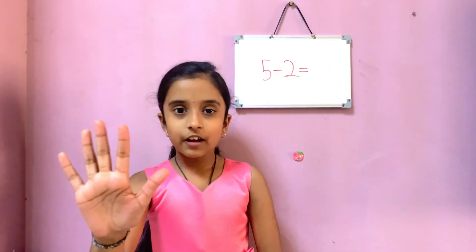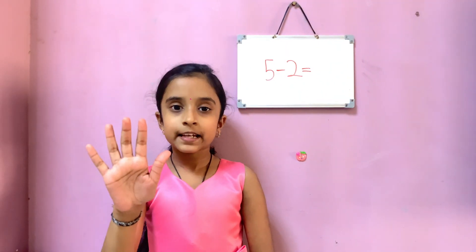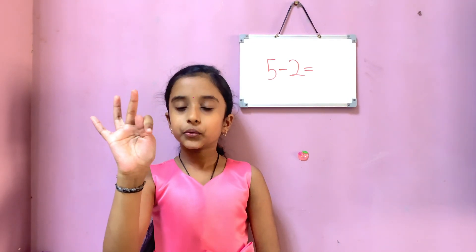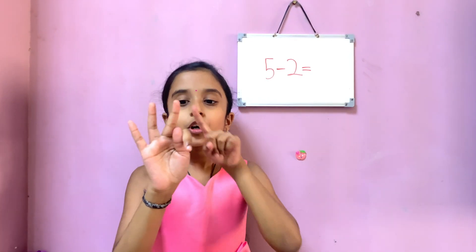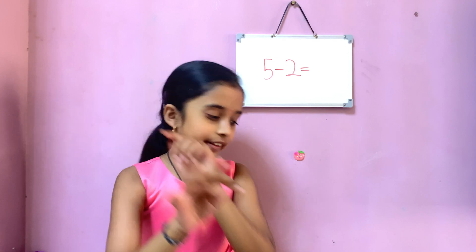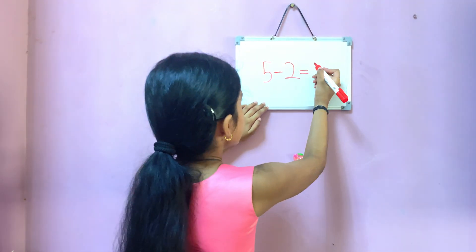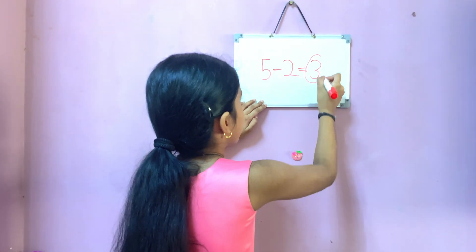Big number five in hand. Now let's take away two. One, two. How many are left? One, two, three. So the answer is three.